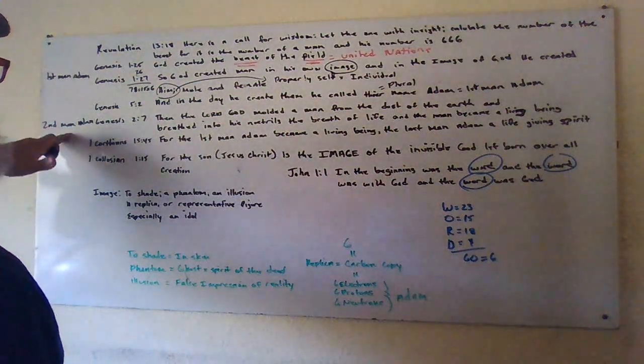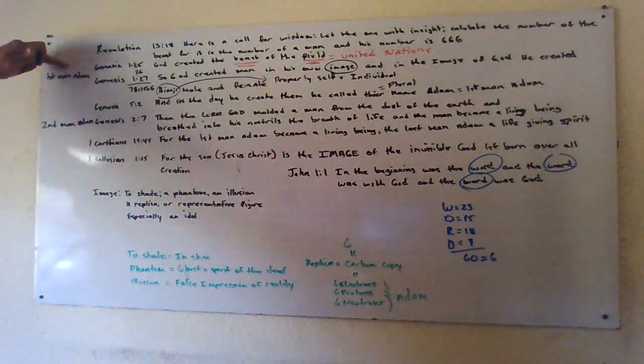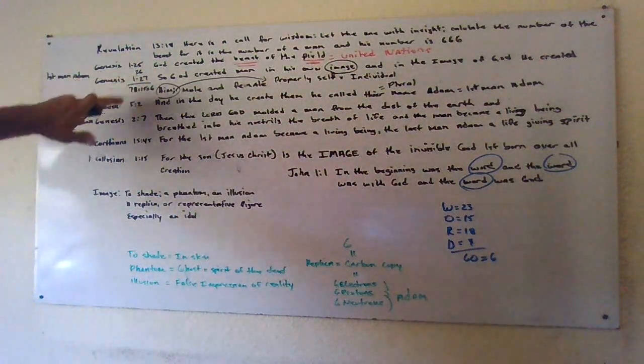And then later, the creator, this is the second man, Adam. First man, Adam, Genesis 1:26 and 27. Second man, Adam, 2:7.